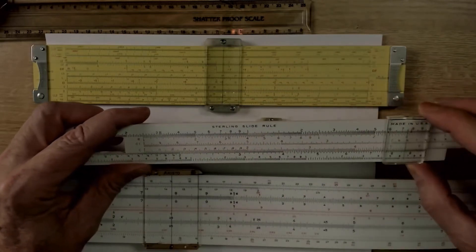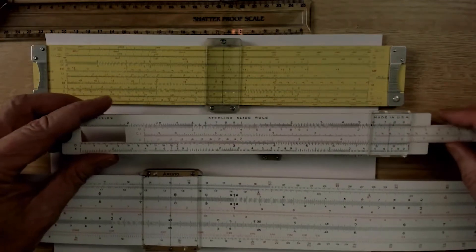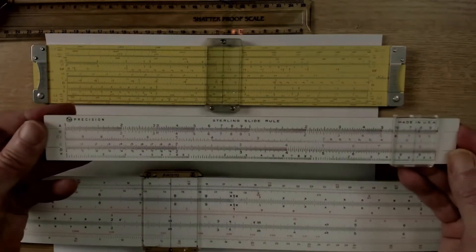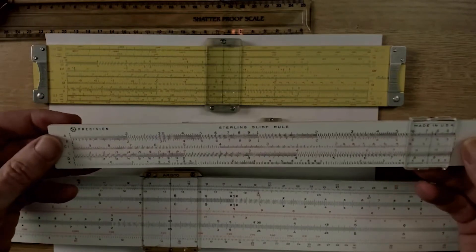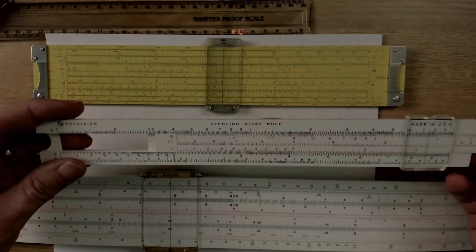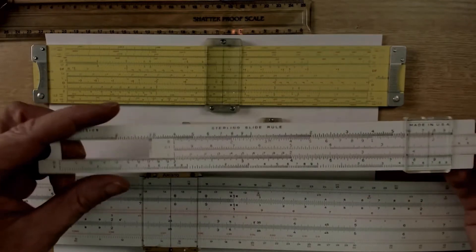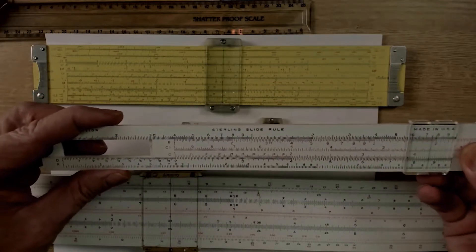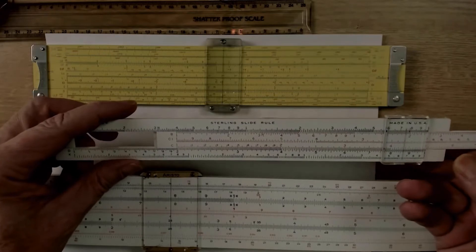Now, the way the slide rule operates is that you have two rulers that are the same length. And by moving one ruler on top of the other, you can add things together. And in this case, what we're adding is logarithms.